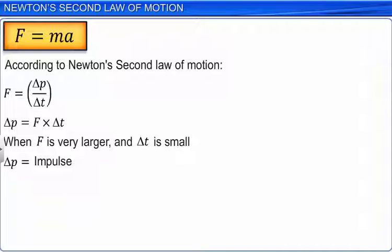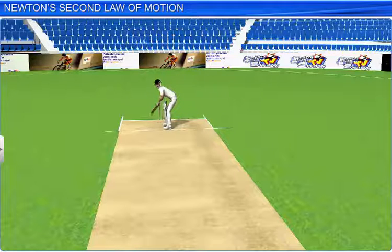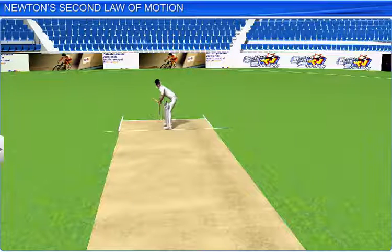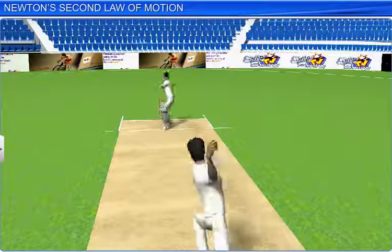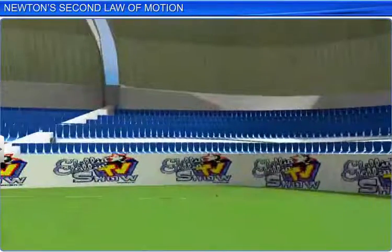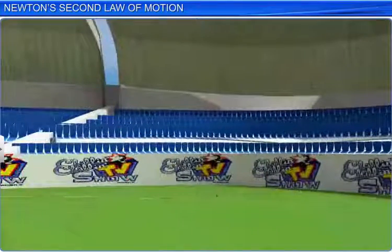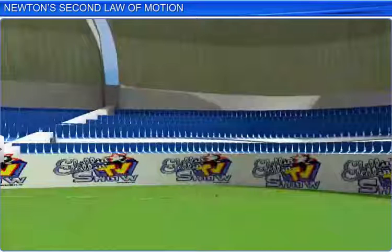A bowler in a cricket match bowls a full-toss ball and the batsman hits a six. In this example, the batsman has applied an impulsive force on the ball due to which there is a tremendous change in the momentum of the ball.